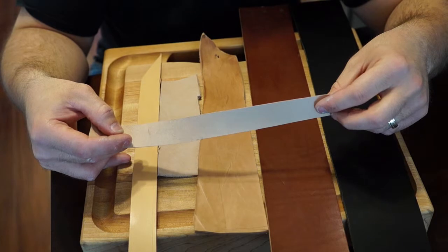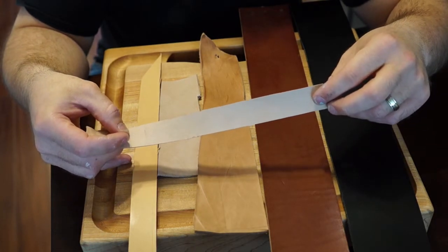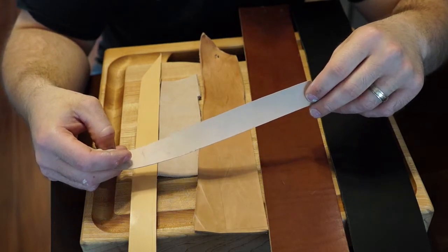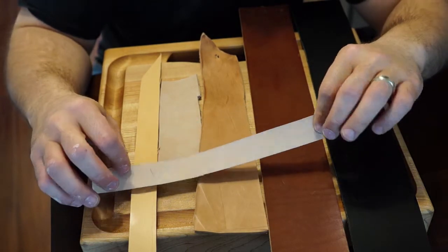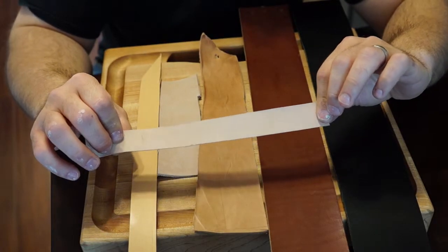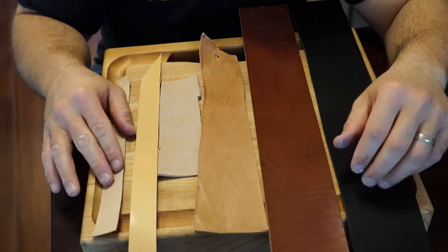If you strop on a strop or tools and stuff, kangaroo in my opinion dries the nicest when you spray like diamond spray or if you put like chromium oxide on it and stuff. The way that, especially diamond sprays, the way that it dries on kangaroo is by far the nicest. Again, this is all my opinion.